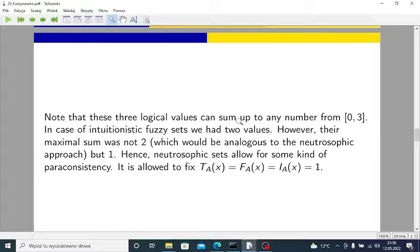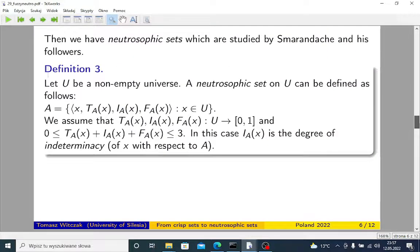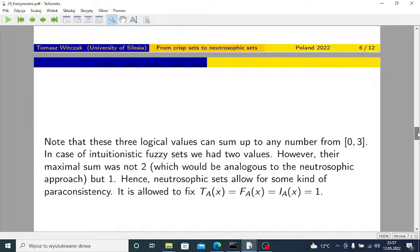Note that in case of intuitionistic fuzzy sets, we had two values, but their maximal sum was not 2, which would be analogous to this neutrosophic approach, which is here, but it was 1.